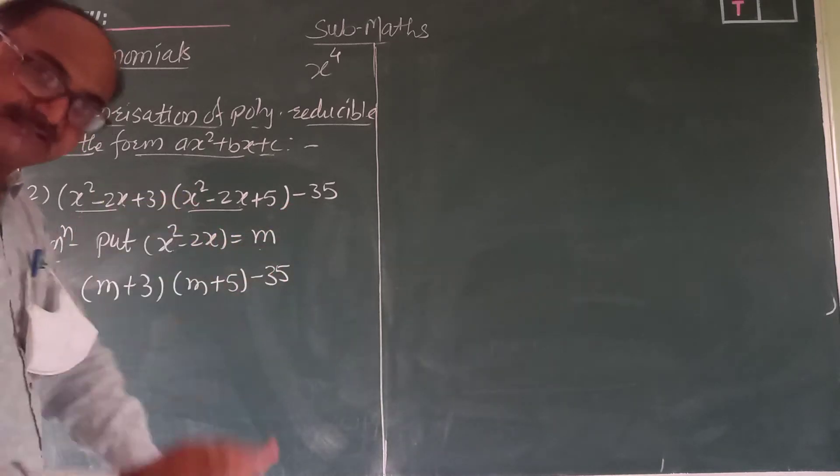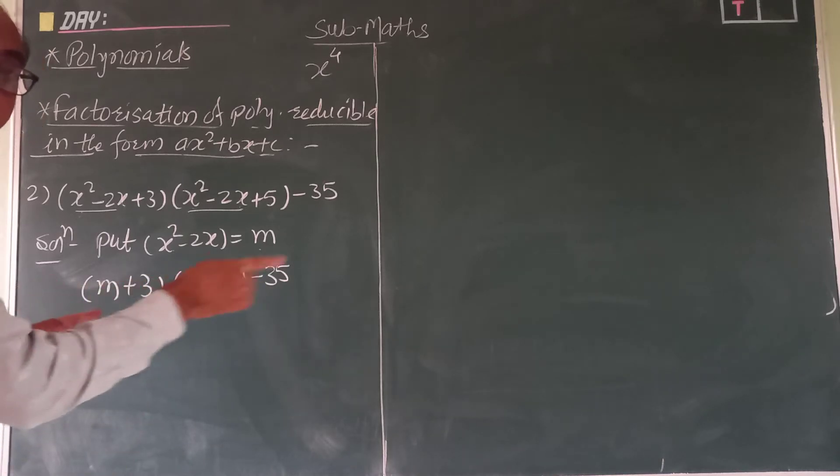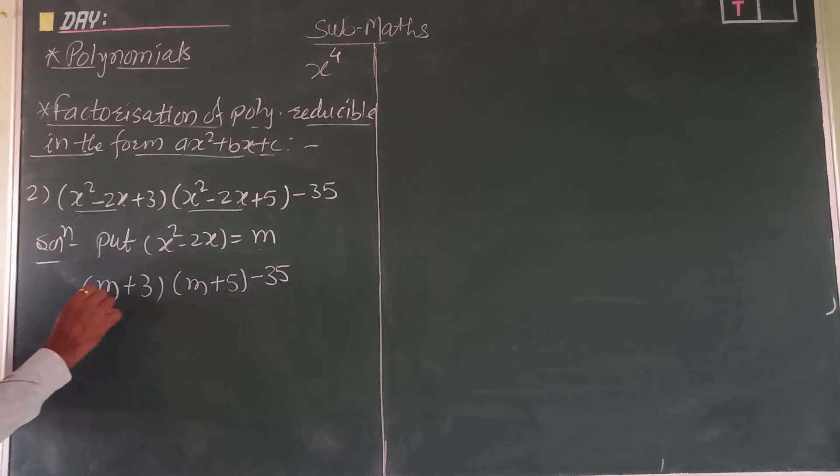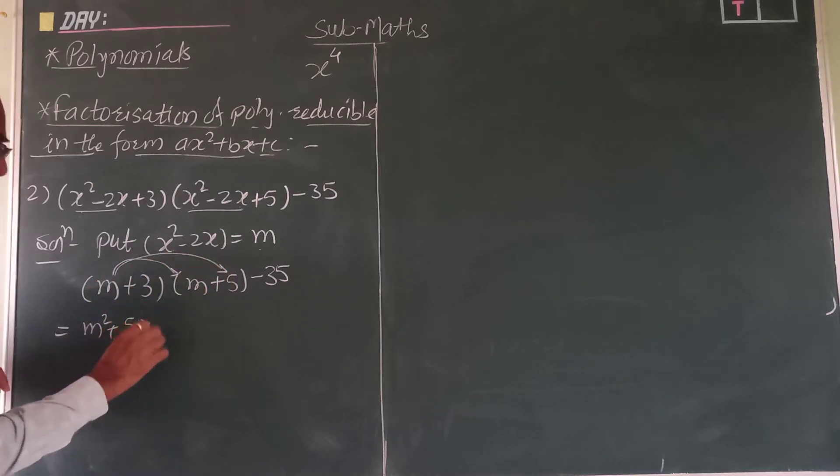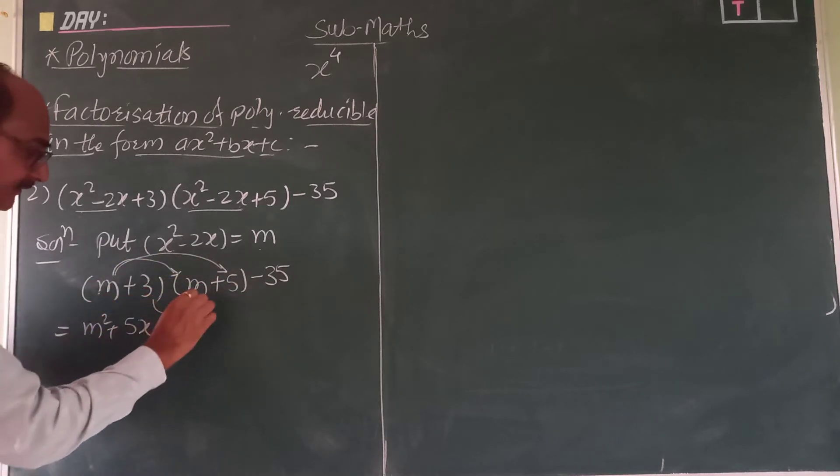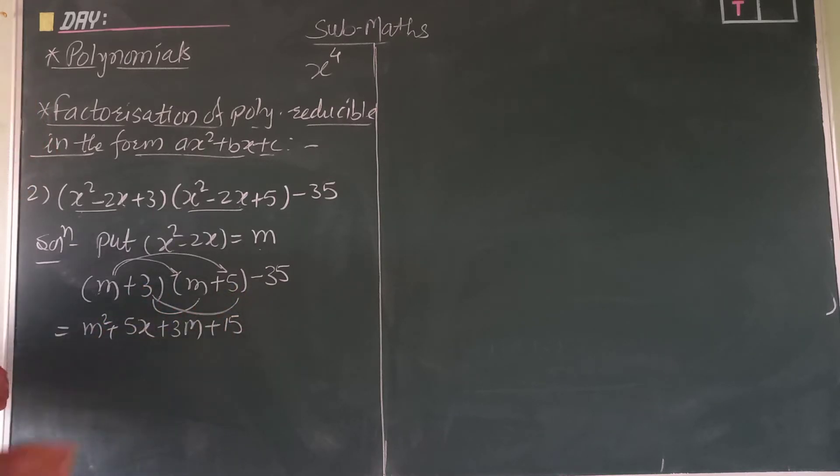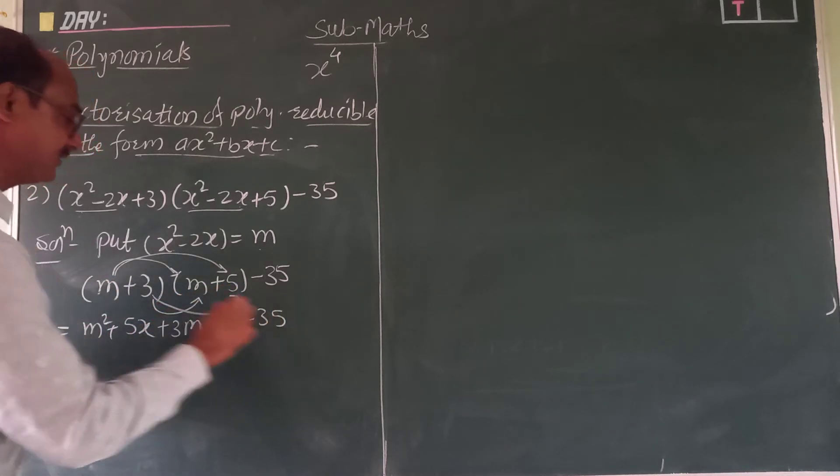Now here two brackets come, not a square type curve, so first you have to take the product of these two. So multiply this m by first, this m squared, then plus m into 5, 5m, then by 3, then plus 3m, then 3 into 5 plus 15.